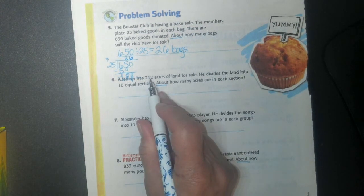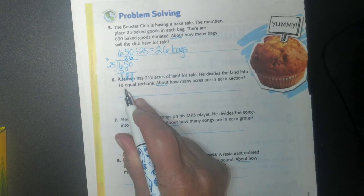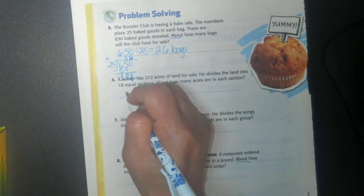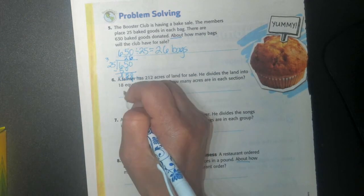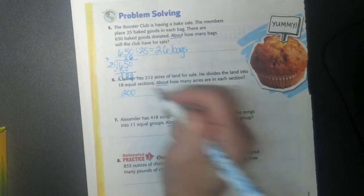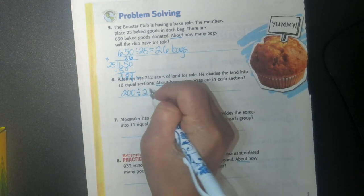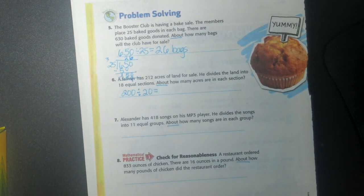Maybe if I was buying bags, I might buy 30 just to make sure I had enough. So now we have a farmer with 212 acres. He's going to divide it up into 18 equal pieces. About how many acres are in each one. So 212 is about 200, and 18 is about 20.